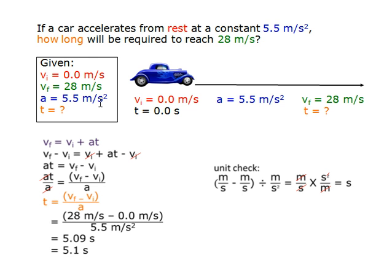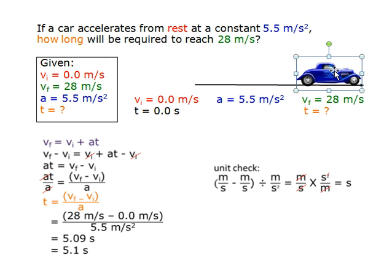So for this car to begin at the initial velocity of 0.0 meters per second and accelerate at 5.5 meters per second squared and reach the final velocity of 28 meters per second, how long would it take?